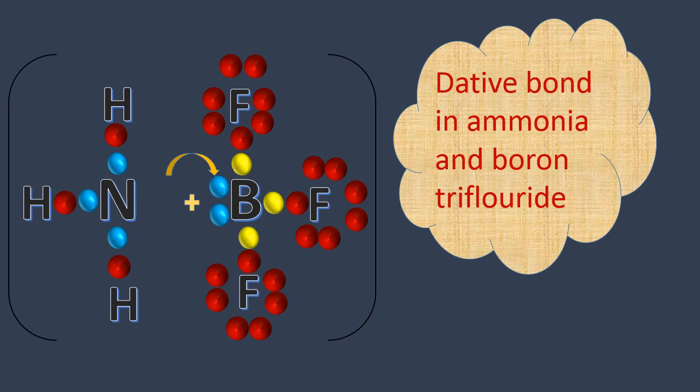And we know when a pair of electrons is shared and donated by a single atom, an adduct formation takes place. Adduct formation will be shown by square brackets.